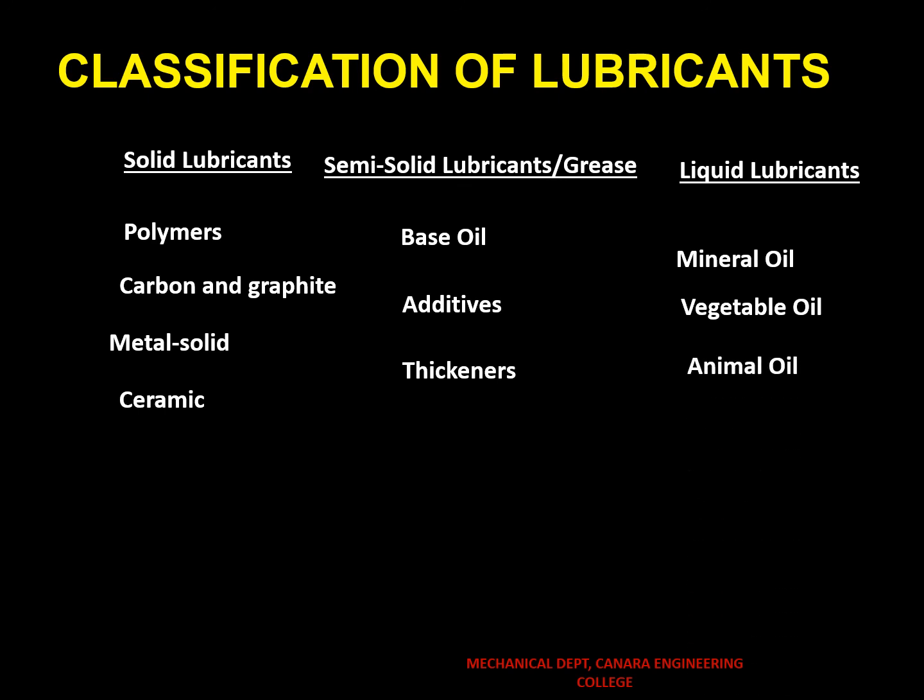Animal oil: fats extracted from fish and animals are the sources of animal oil. Animal oil is sometimes also known as fixed oil. It is added to mineral oil in order to improve the film-forming ability of the mineral oil.